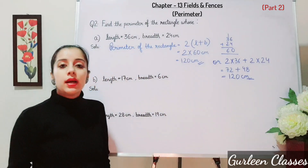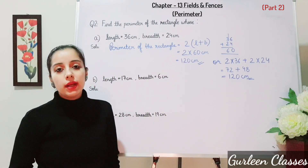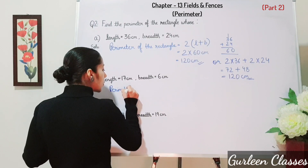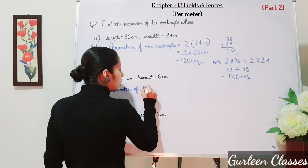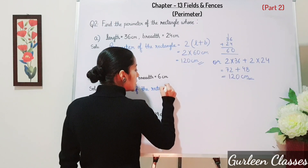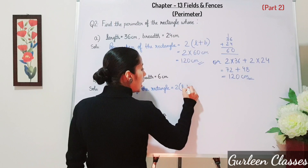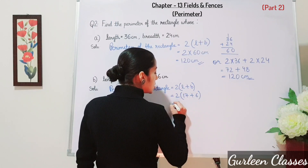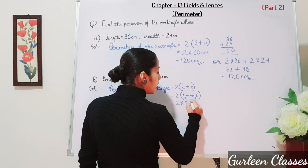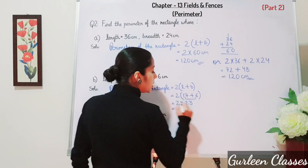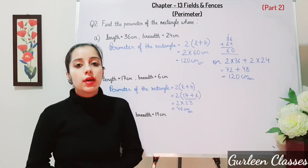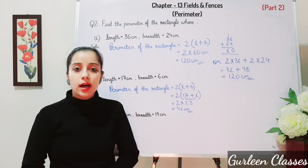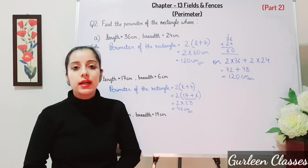Part B — length is 17 cm and breadth is 6 cm. Perimeter of the rectangle equals 2 into (17 plus 6), that is 2 into 23, which equals 46 cm. Part C is a homework question where length is 28 cm and breadth is 19 cm; use the formula perimeter of the rectangle equals 2 into (length plus breadth).